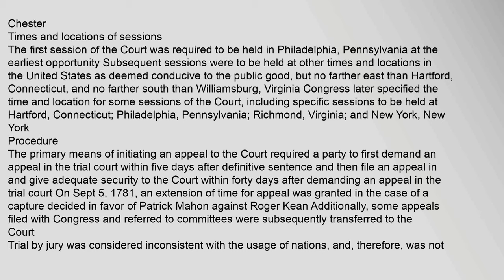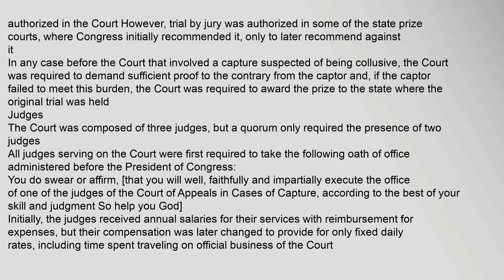Procedure. The primary means of initiating an appeal to the Court required a party to first demand an appeal in the trial court within five days after definitive sentence, and then file an appeal and give adequate security to the court within 40 days after demanding an appeal. On September 5, 1781, an extension of time for appeal was granted in the case of a capture decided in favor of Patrick Mahon against Roger Keene. Trial by jury was considered inconsistent with the usage of nations and was not authorized in the court. In any case before the court that involved a capture suspected of being collusive, the court was required to demand sufficient proof to the contrary from the captor.